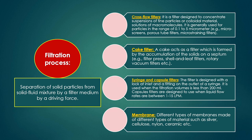Cross-flow filters are designed to concentrate suspensions of fine particles or colloidal materials, generally for particles in the range of 0.1–2.5 micrometers, using porous tube filters and microstraining filters. Cake filters use a cake formed by accumulation of solids on a septum — examples include filter press, shell and leaf filters, and rotary vacuum filters. Membranes are an important filter medium made from materials such as silver, cellulose, nylon, or ceramic, separating particulate materials based on pore size.